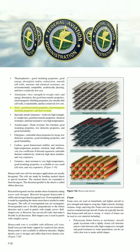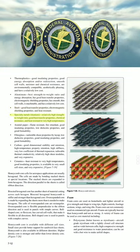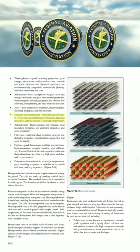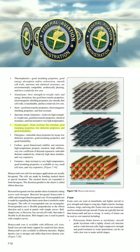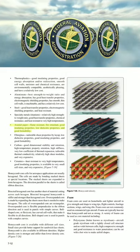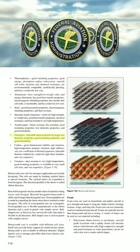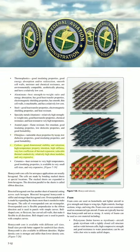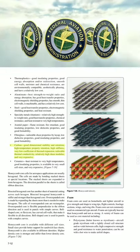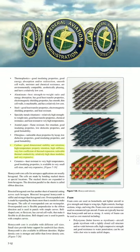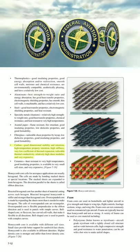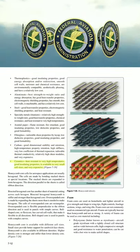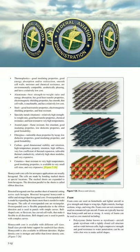Steel honeycomb offers good heat transfer, electromagnetic shielding, and heat resistance. Titanium provides relatively high strength-to-weight ratio, good heat transfer, chemical resistance, and resistance to very high temperatures. Aramid paper core is flame resistant, fire retardant, with good insulating properties, low dielectric properties, and good formability. Fiberglass core has tailorable shear properties, low dielectric properties, good insulating properties, and good formability. Carbon core has good dimensional stability, high-temperature property retention, high stiffness, very low coefficient of thermal expansion, tailorable thermal conductivity, and relatively high shear modulus, but is very expensive. Ceramic core is heat-resistant to very high temperatures, has good insulating properties, is available in very small cell sizes, but is very expensive.